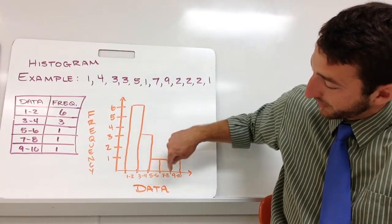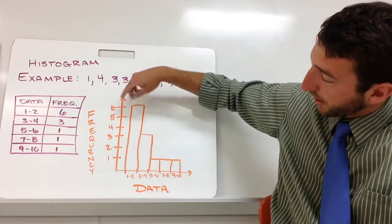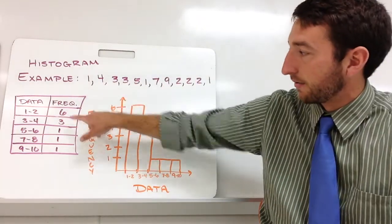We do our bins here along the bottom. So I got one to two, three to four, five to six, seven to eight, nine to ten. Our frequency goes up and you just draw the bar to the height of our frequency that we have on our table.